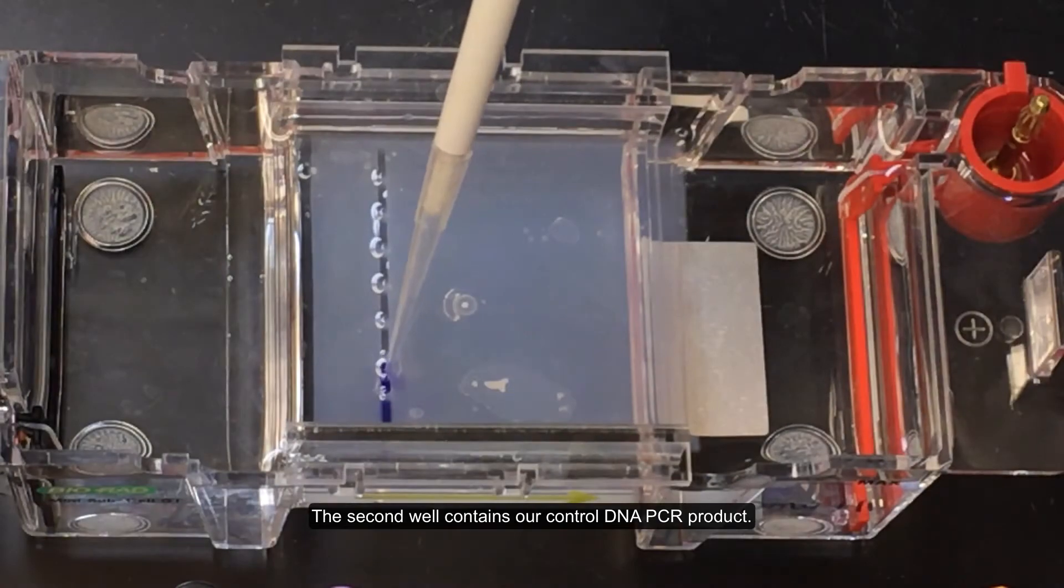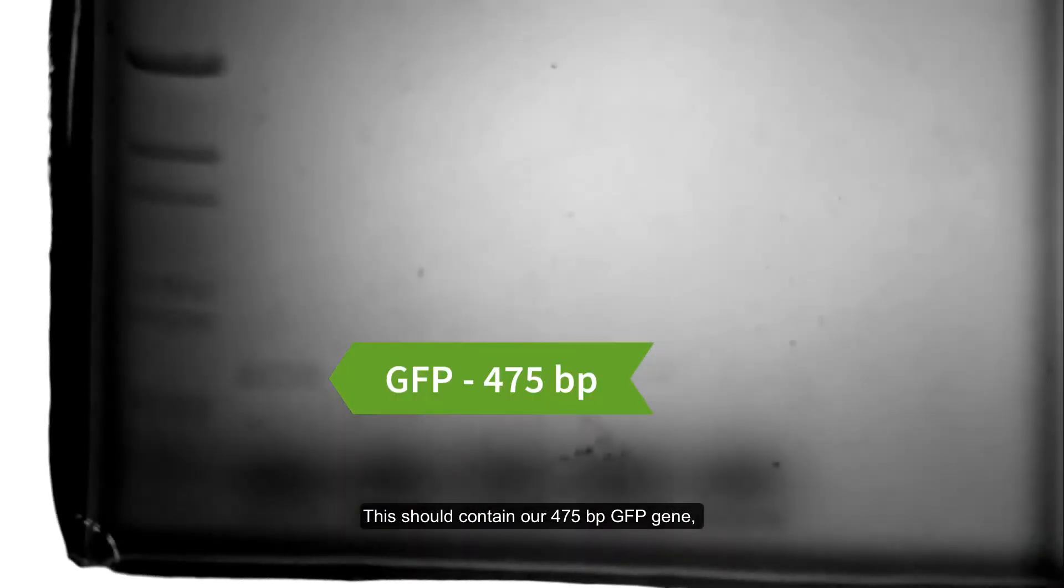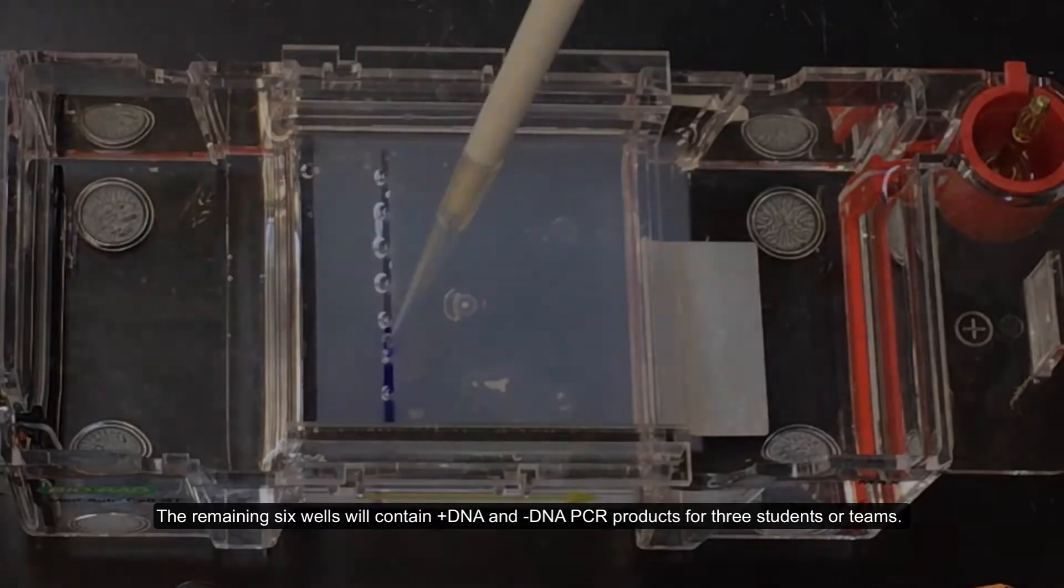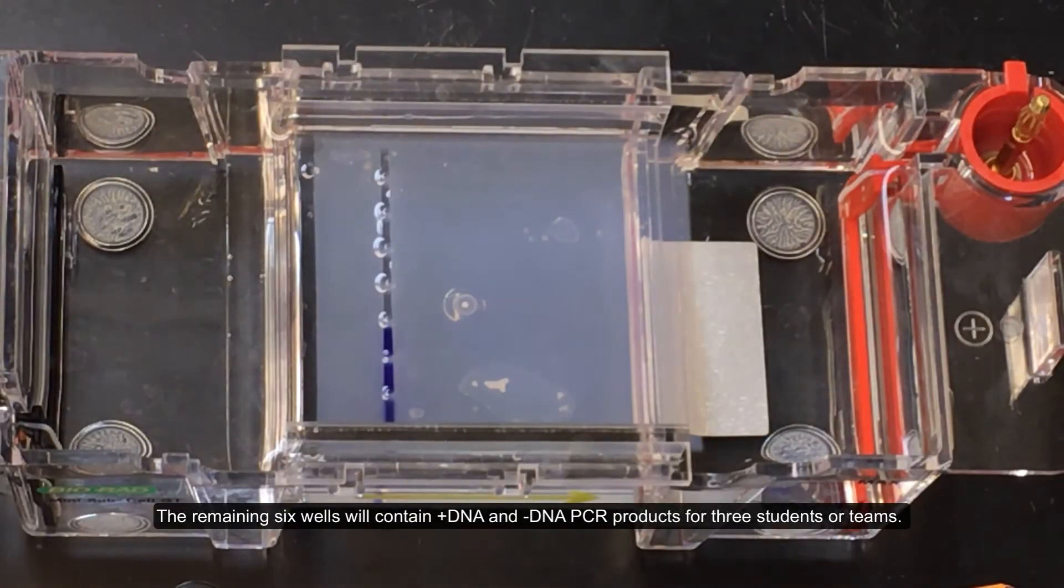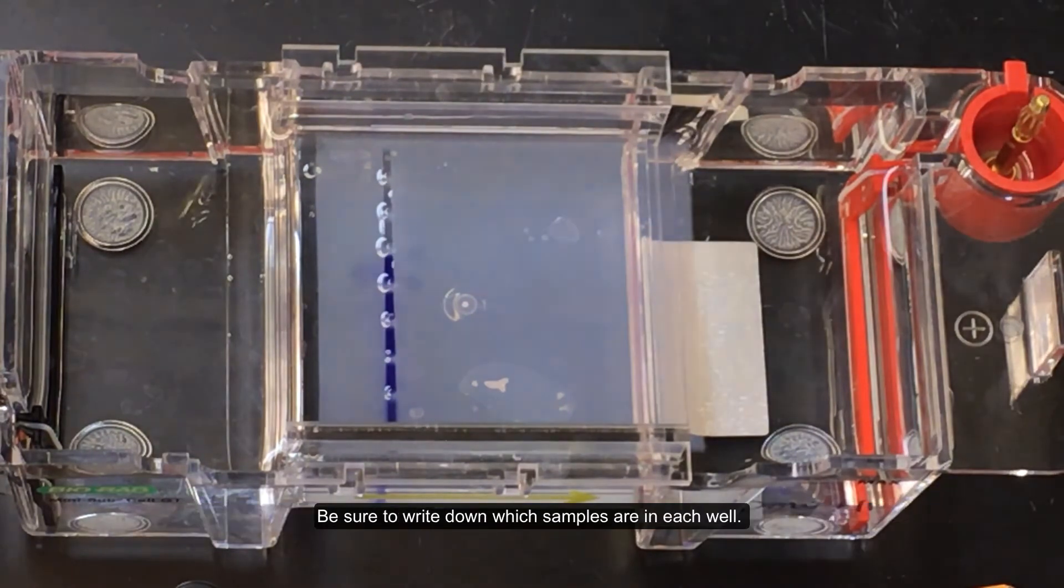The second well contains our control DNA PCR product. This should contain our 475 base pair GFP gene and a 190 base pair bacterial housekeeping gene. The remaining six wells will contain plus DNA and minus DNA PCR products for three students or teams. Be sure to write down which samples are in each well.